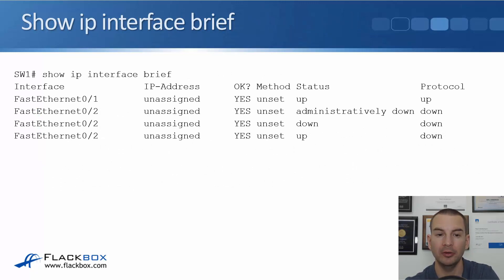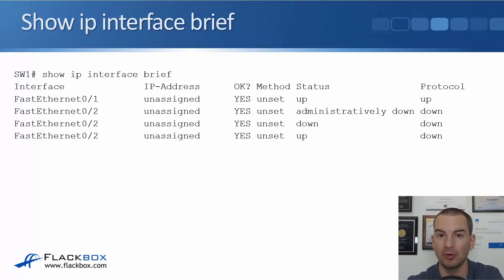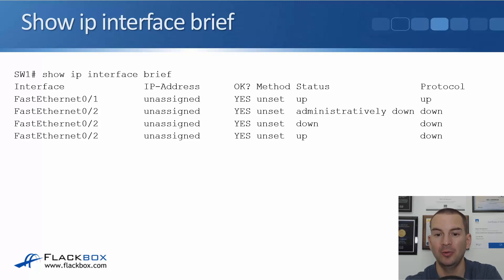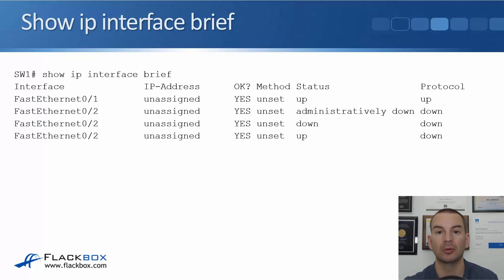Here is an example output of show IP interface brief. FastEthernet 0/1 is up up — that's all good. FastEthernet 0/2 is administratively down, so you need to do a no shutdown on the interface to bring it up. FastEthernet 0/2 is down down, indicating most likely a layer 1 problem — check that it's cabled on both sides and powered on the other side. FastEthernet 0/2 is up down, which most likely is a configuration mismatch — go on both devices, do a show run, and check the configuration on both interfaces.